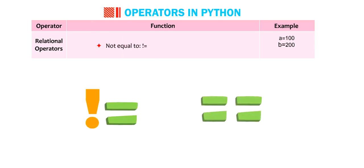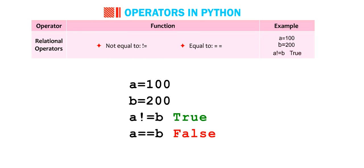Not equal to. Equal to. Example. A is greater than B. True. A is equal to B. False.